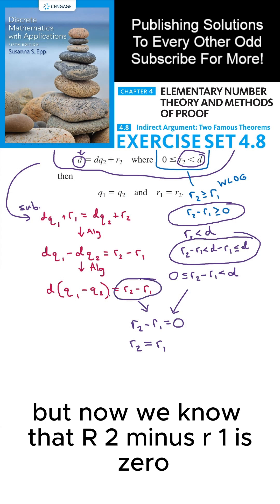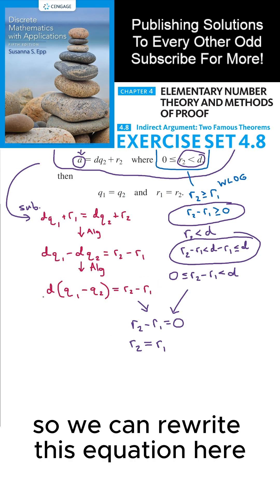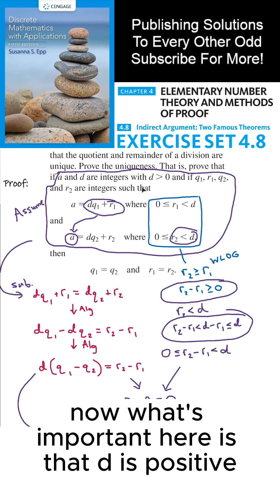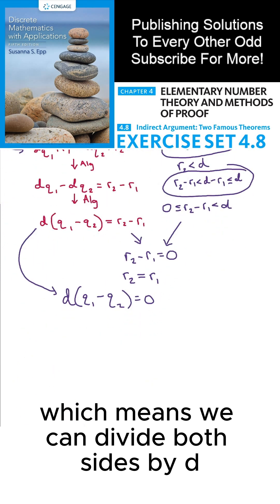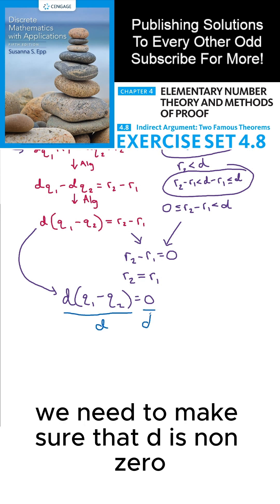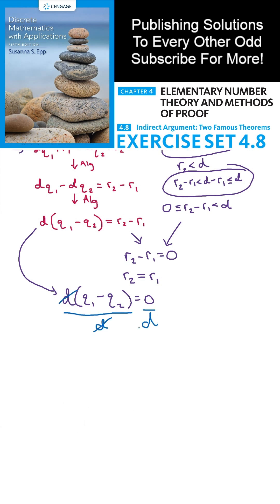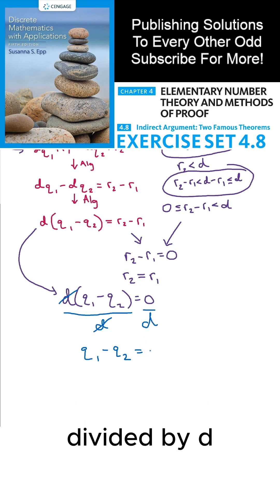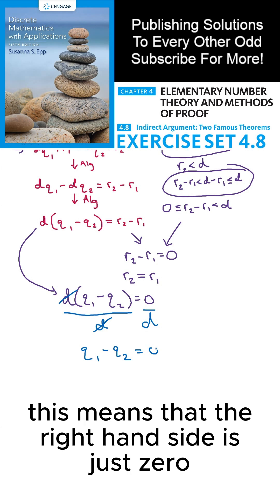But now we know that R2 minus R1 is zero. So we can rewrite this equation here as D times Q1 minus Q2 equals zero. Now what's important here is that D is positive, which means we can divide both sides by D. We need to make sure that D is non-zero because we can't divide by zero on both sides. So this means that we know that Q1 minus Q2 equals zero divided by D, but since D is non-zero, this means that the right-hand side is just zero.